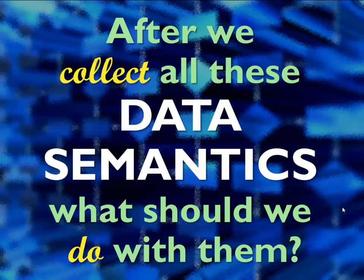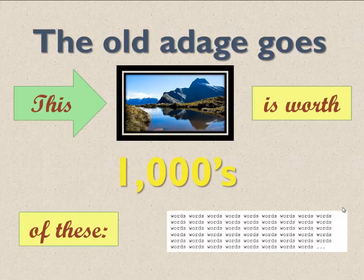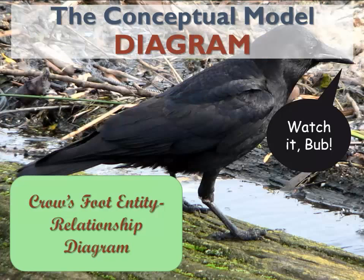After we collect all these data semantics, what do we do with them? Well as the old adage goes, a picture is worth a thousand words. So what we're going to do is draw a diagram. And this diagram is called a crow's foot entity relationship diagram. So let's go back and take a look at our example again, crow's foot style.